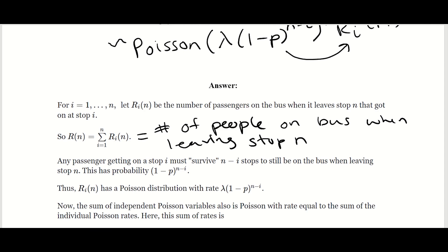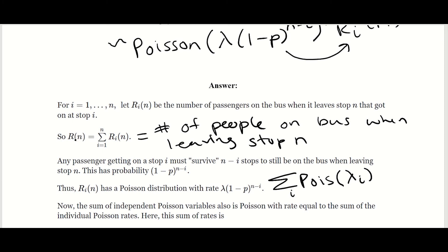Now that we know what R sub i of n is, we can think about how Poisson distributions work. If you're doing a sum of multiple independent Poisson distributions with different rates, the result of their sum will also be a Poisson distribution with a rate equal to the sum of the individual Poisson rates. So our next step is to take the rate for R sub i of n and sum it across all values from i equals 1 to i equals n, to get the Poisson distribution rate for R of n.